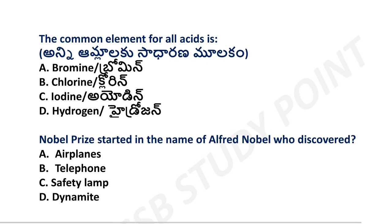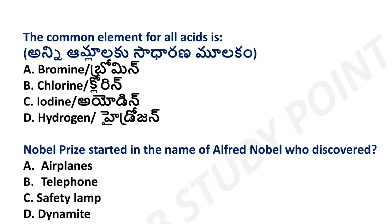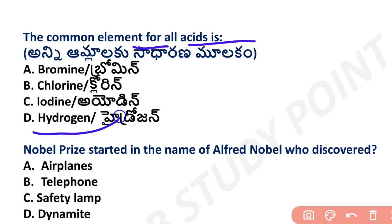Next question: what is the common element in all acids? The answer is hydrogen. In all acids, hydrogen is present as the common element. H is added to every acid — hydrogen is the common element in all acids.